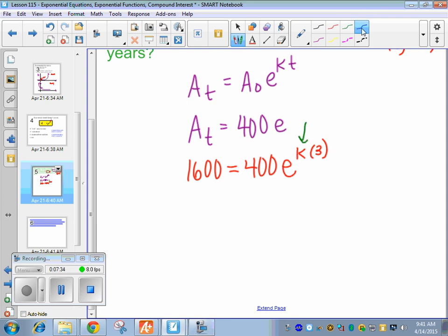First thing you have to do, and this is important, is divide by 400. You have to isolate that e. So 1,600 divided by 400 is 4. And then for k times 3, I'm just going to flip it and put the 3 in front. It's the same thing when you're multiplying, so I'm going to put 3k.